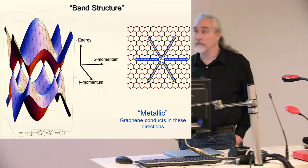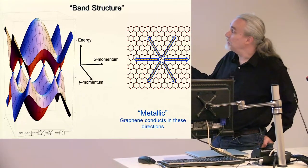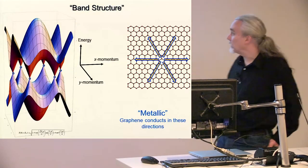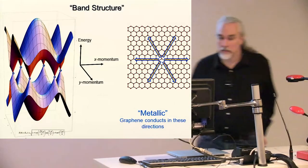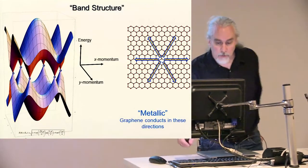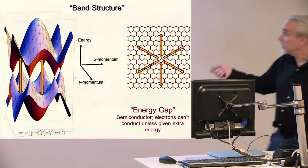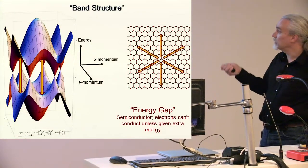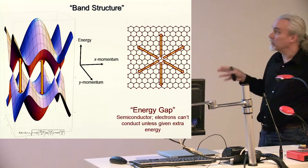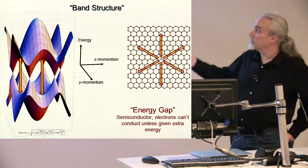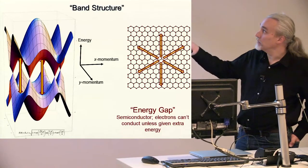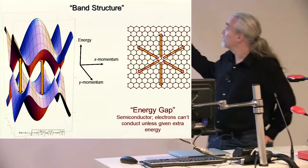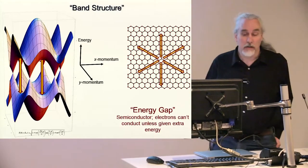But for other directions there's what we call a band gap, this energy gap is the characteristic of a semiconductor and electrons can't conduct there unless they're given extra energy to promote electrons down here to unfilled states up here and so in those directions graphene is effectively not conducting.